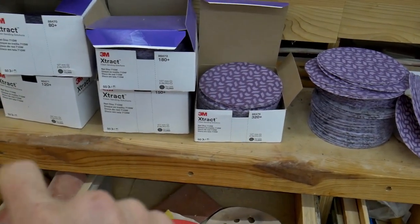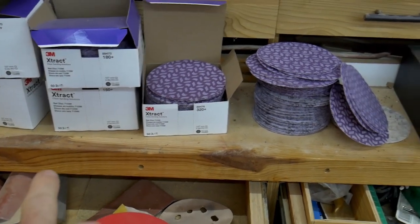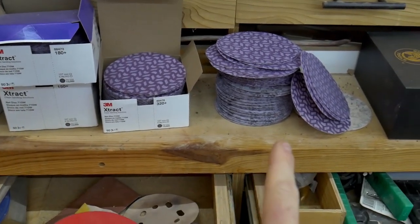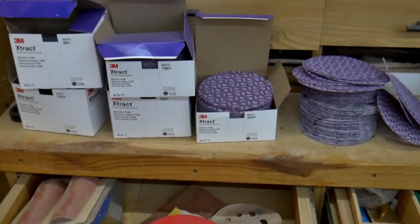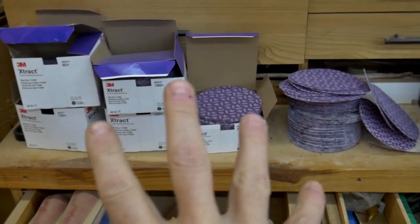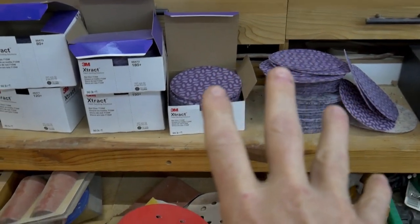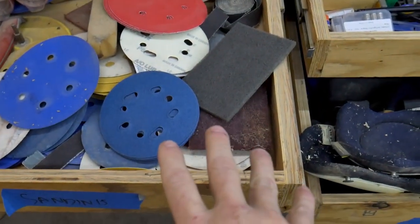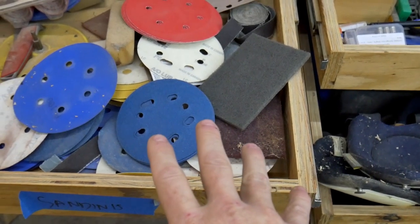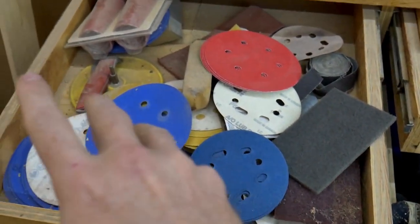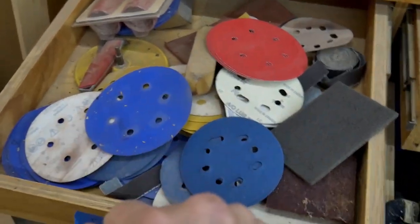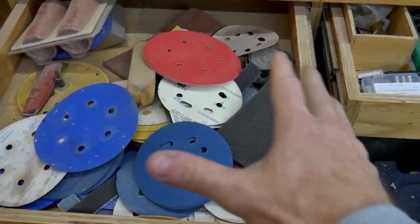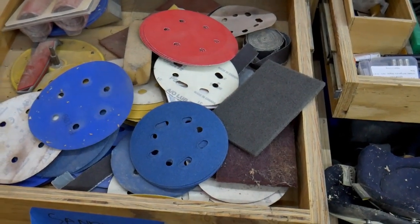I'm not sure how many different grades I have here, at least six or seven. I have 80, 120, 150, 180, 220, 240, and 320 for sure. What I intend to do today is get all this sandpaper organized and installed in this drawer in a way that I know where each grit is and can easily grab it without ending up with a big pile mess like I've got going on here.